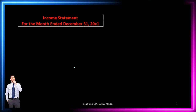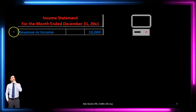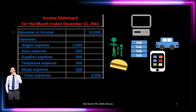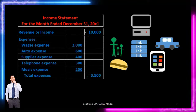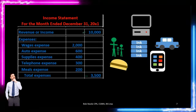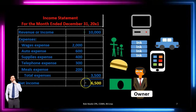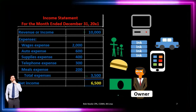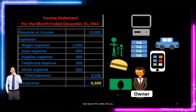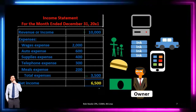Therefore, our income statement, which will be stated for the month ended December 1st through December 31st, shows revenue — the one line item, computer service — of $10,000. Then we subcategorize all the expenses: wages, auto, supplies, telephone, meals, which adds up to $3,500. So in essence, our income statement equation is revenue minus expenses equals net income — in this case, $6,500. That's how much the equity section has gone up. The owner could pull that money out as a draw, but if it remains in the business, the balance sheet has gone up for the period December 1st through December 31st by $6,500.